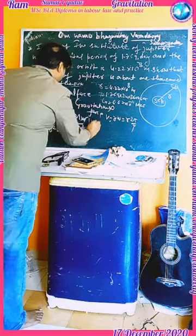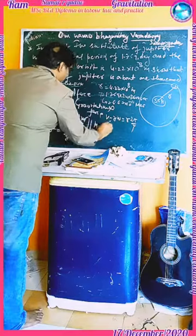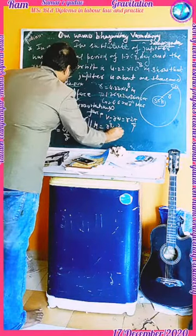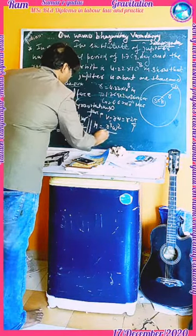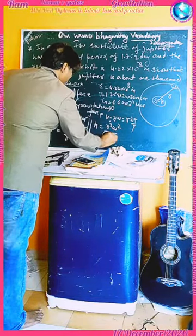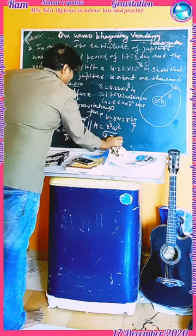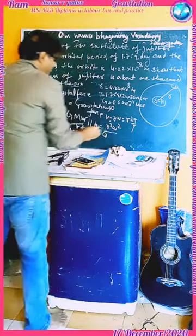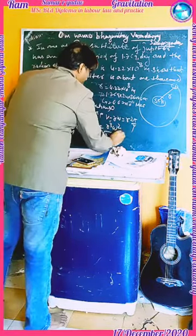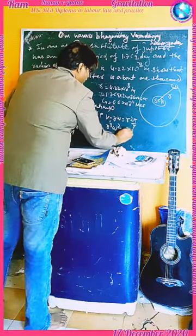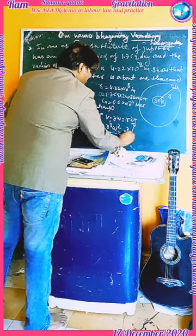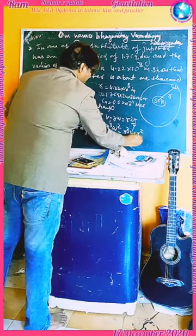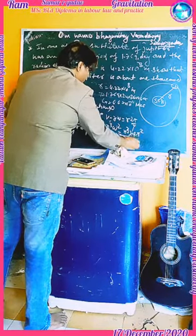Therefore, capital M is equal to R cubed into omega squared upon G. That is, M equals R cubed into 4π squared upon T squared into G.